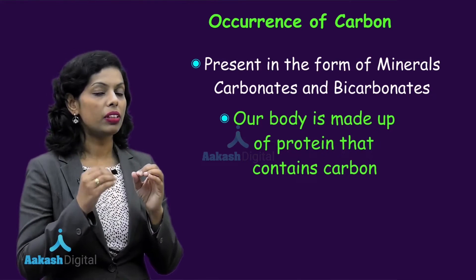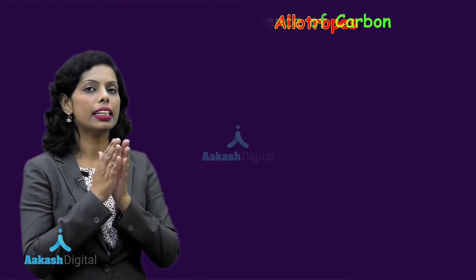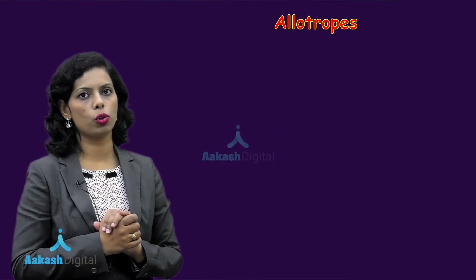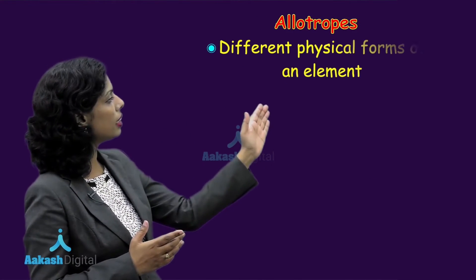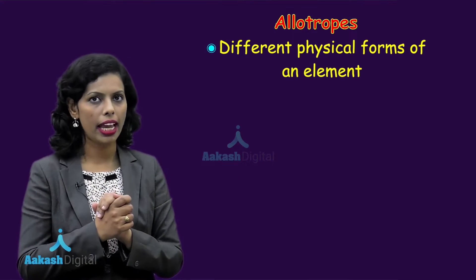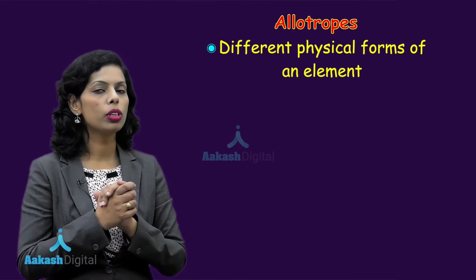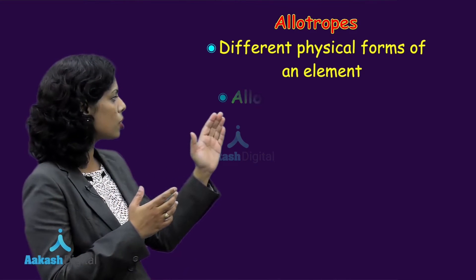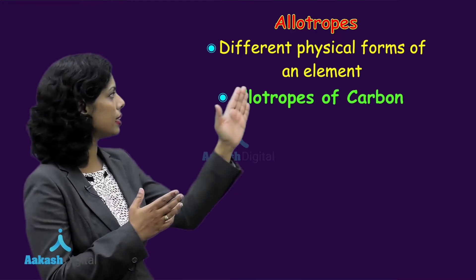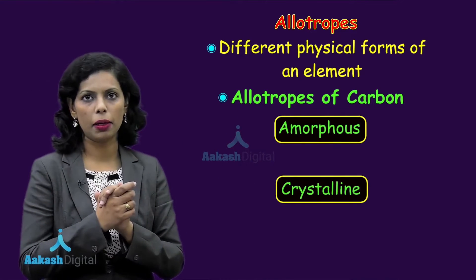Then we discussed the next point — that carbon has a number of allotropes. Allotropes are basically the different physical forms of elements. If we are talking about carbon, it has two types of allotropes: one is amorphous and the other is crystalline.